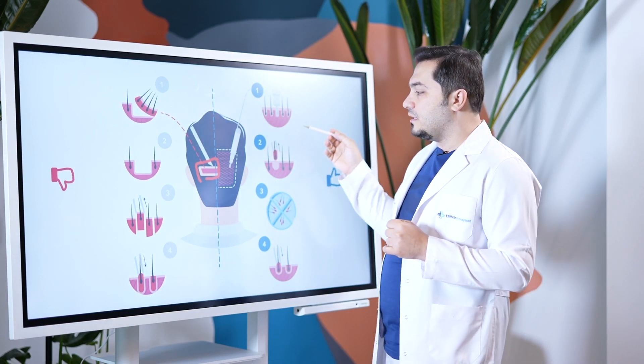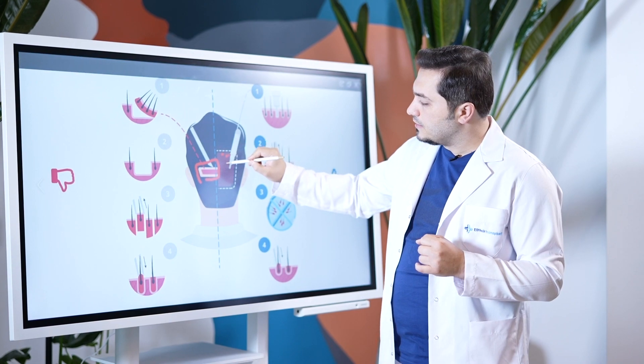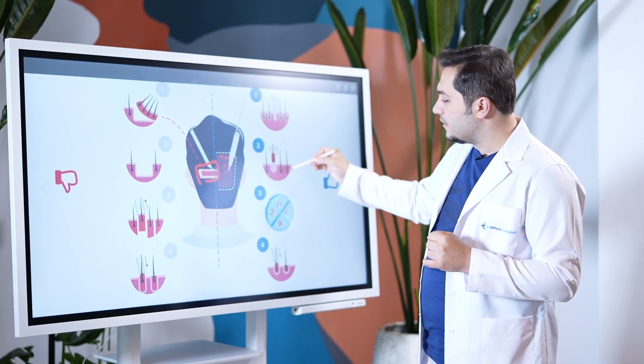With FUE, or Follicular Unit Extraction, the grafts are extracted individually, then collected in the fluid, and finally transplanted one by one.